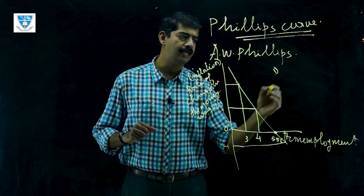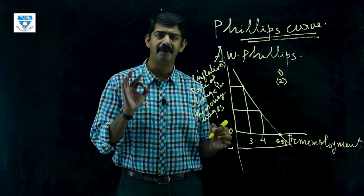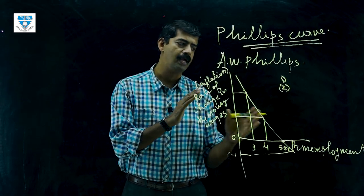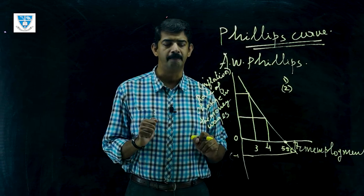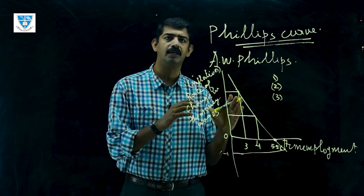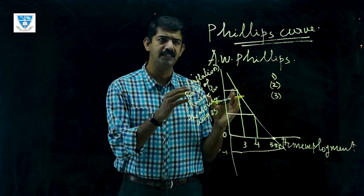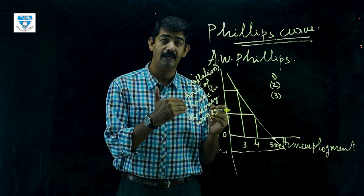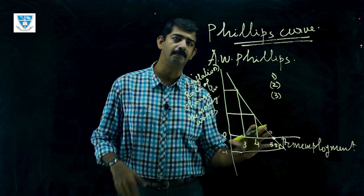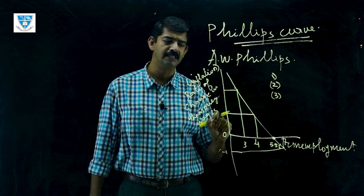The second important reason is that whenever there is an excess demand for labour in the economy, we can see an inverse relationship between unemployment and inflation. The third reason is that whenever there is a shortage of labour, or when population and other factors reduce the level of unemployment, this relationship emerges in the system.